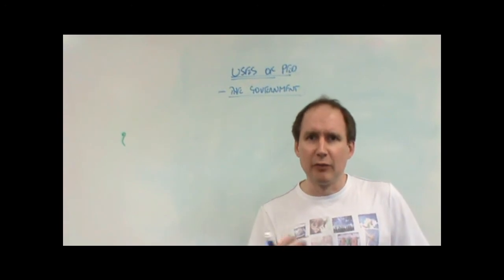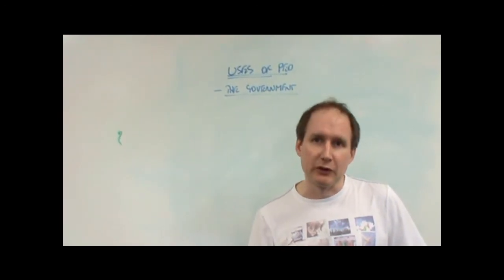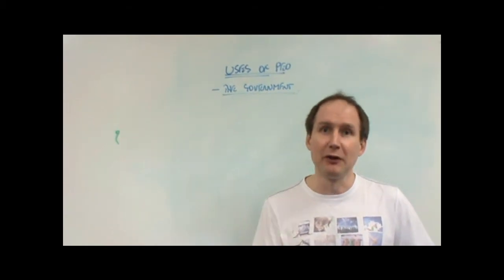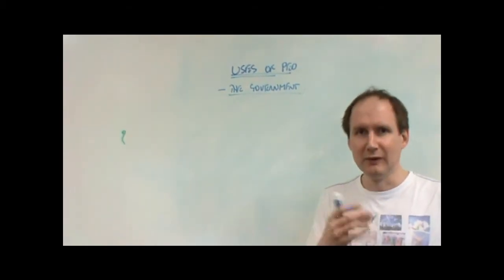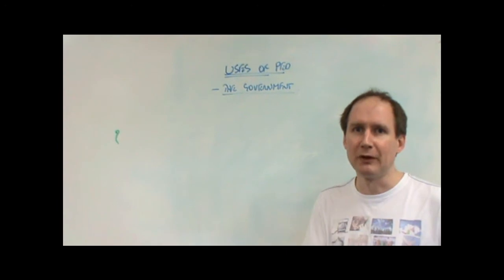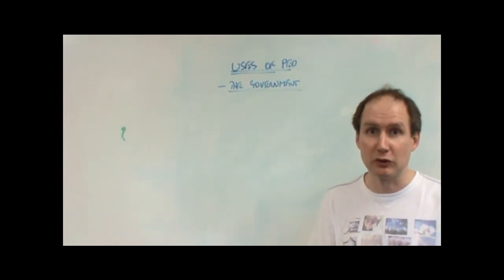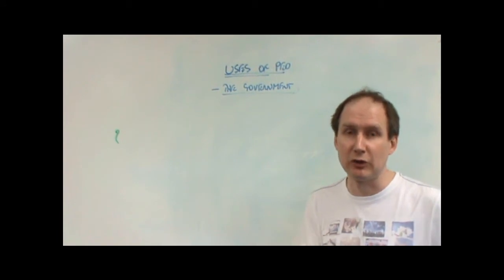So when prices rise, the government would rather we kept on buying those products so that we continue to pay the tax. So you might well think that taxes on cigarettes and petrol and alcohol are intended to reduce consumption because of the negative external costs they produce.